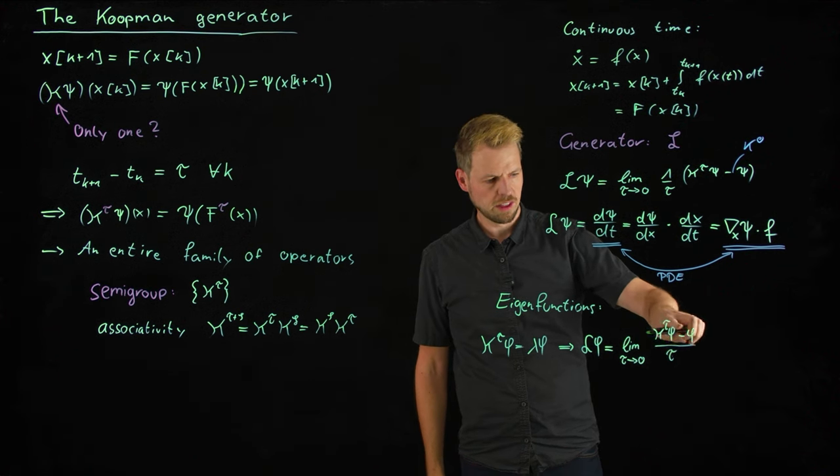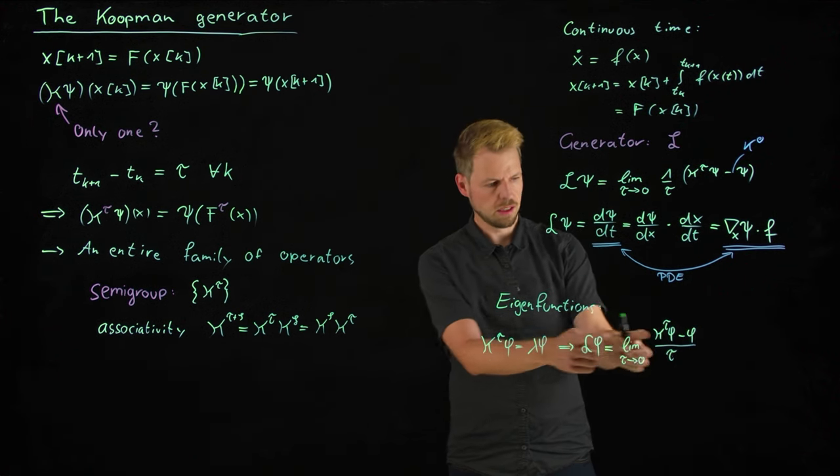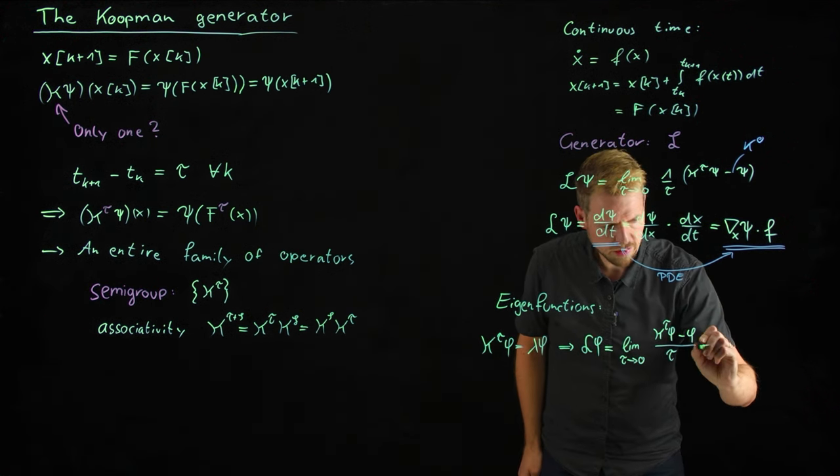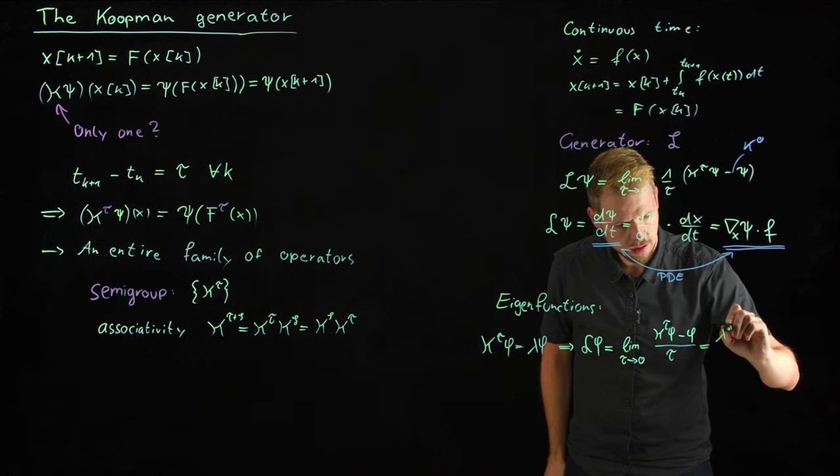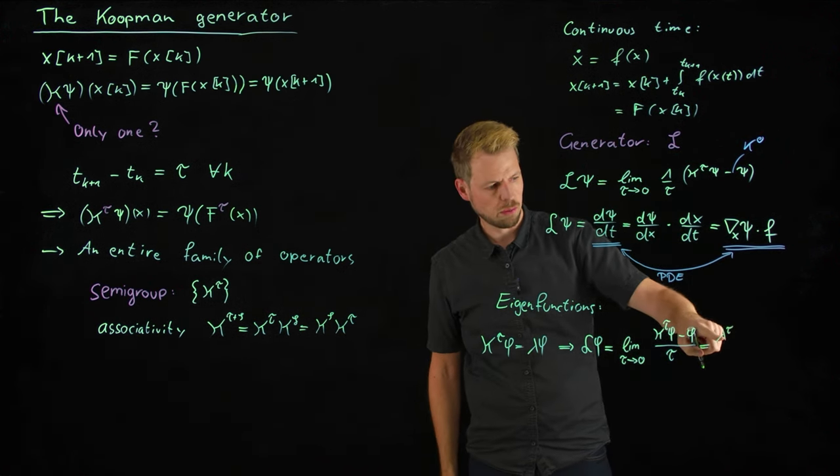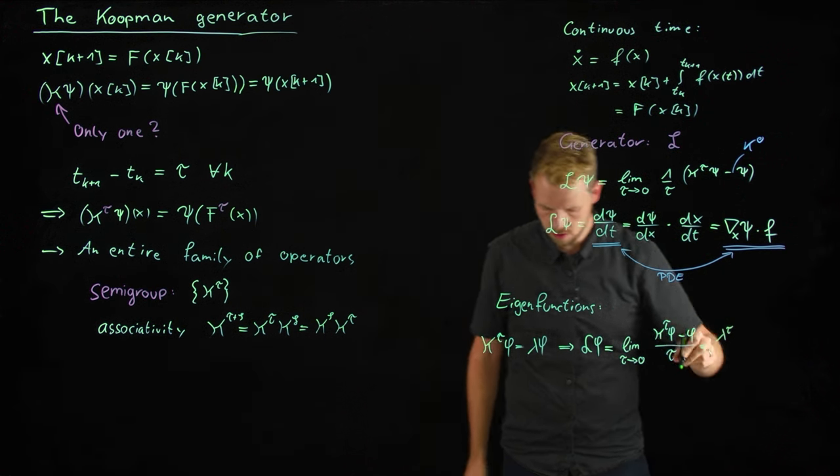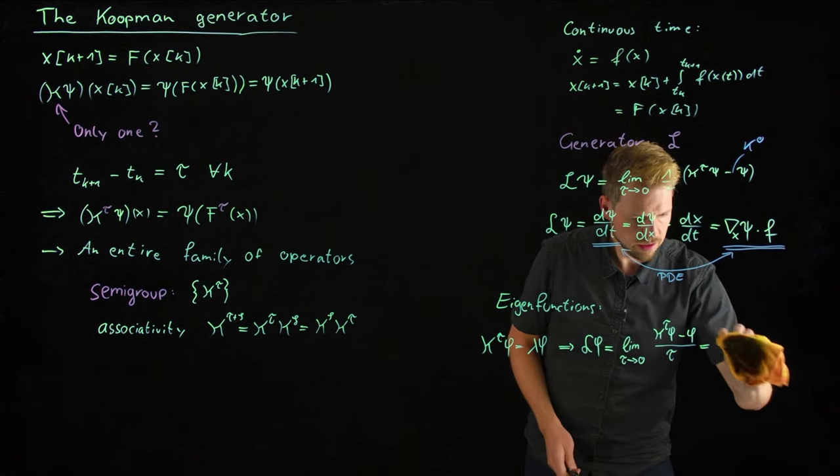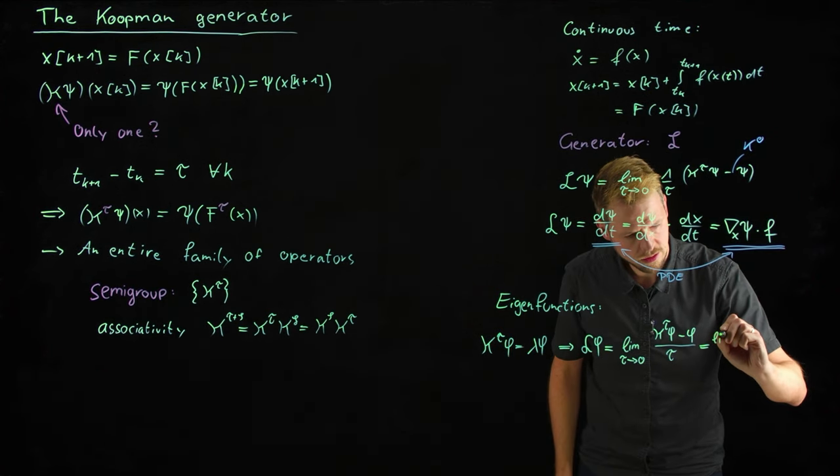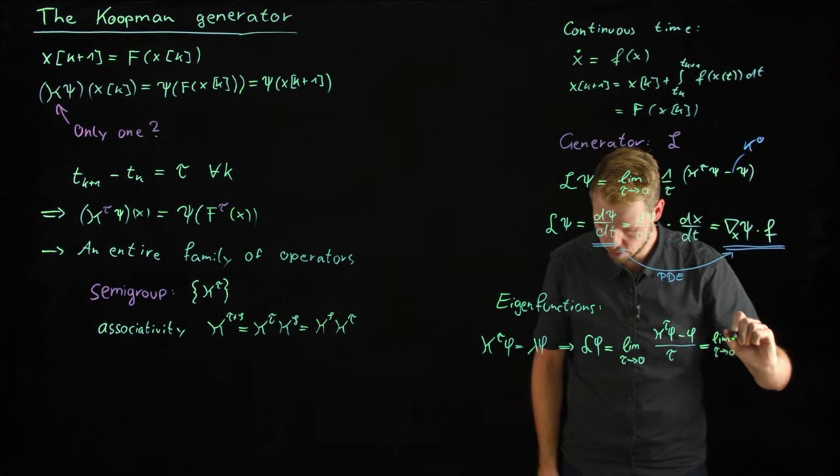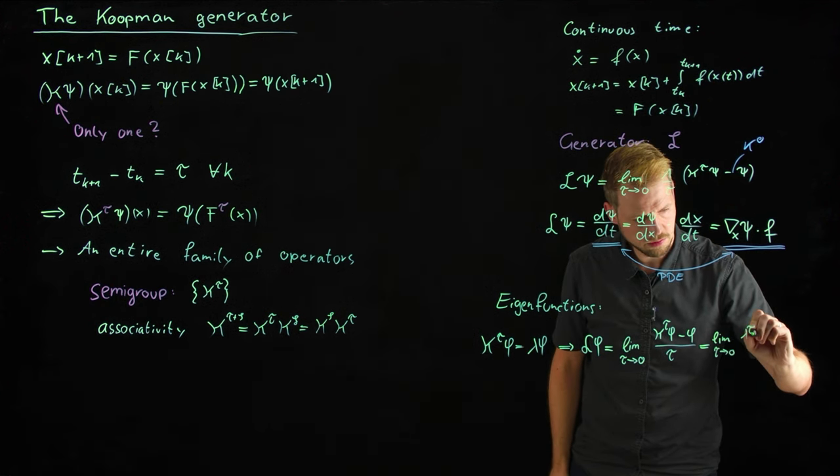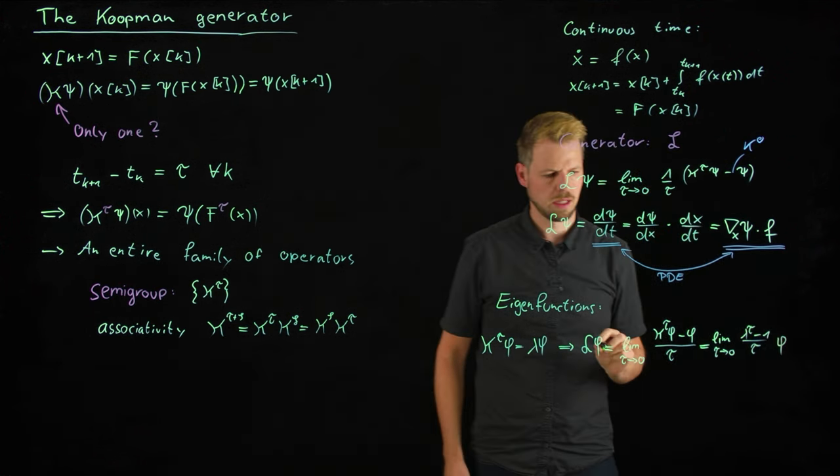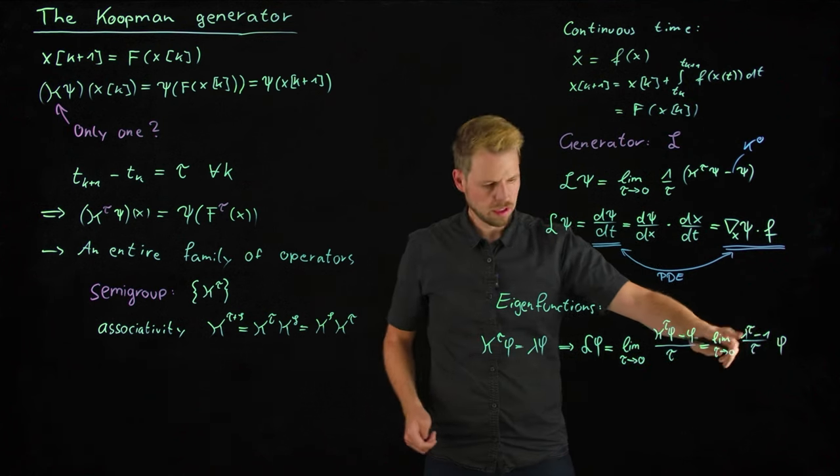Then we can carry over this eigenfunction to the generator setting. So applying the generator to this one is simply using this definition. I'm using this equation, so I'm taking the limit tau towards zero, and then the Koopman operator applied to phi minus the function itself, divided by tau. And what we can see here is, there's a one in front of this and there's a lambda in front of this. I can simply plug this one in. So this becomes lambda phi, and this becomes one times phi.